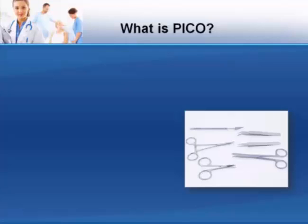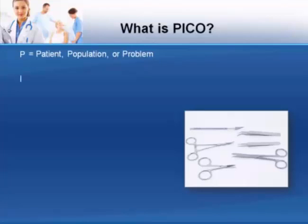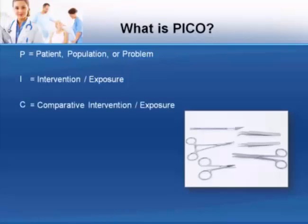Each of the four letters in PICO represents a common component of a clinical question. The P stands for patient, population, or problem. The I refers to the intervention or exposure. C stands for the comparative intervention or exposure. And finally, O stands for outcome.